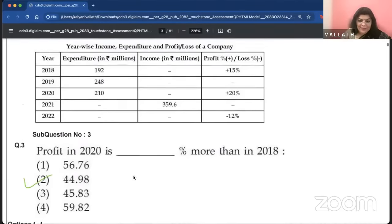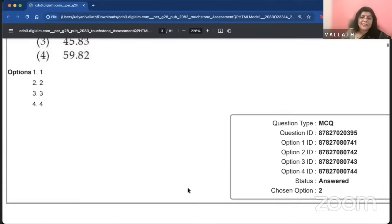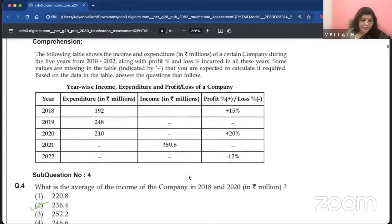Again, data interpretation question, same data interpretation. Profit in 2020 is how many percentage more than in 2018? These questions are a combination of data interpretation and profit and loss. From now on, you have to study mathematics and data interpretation in a little detailed manner.